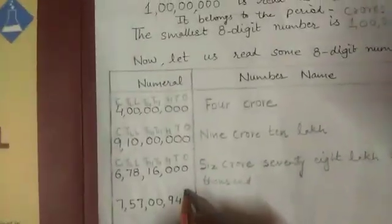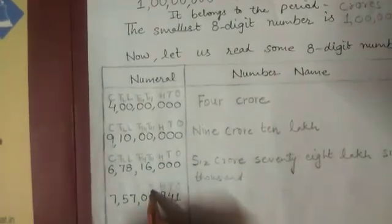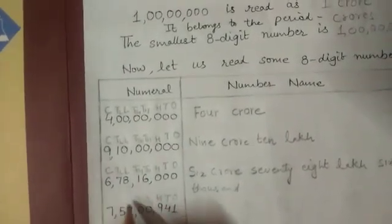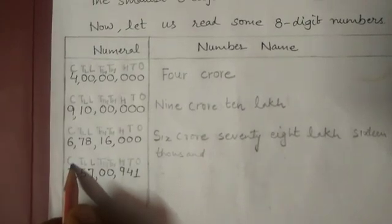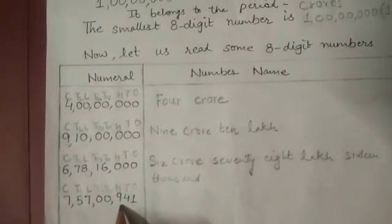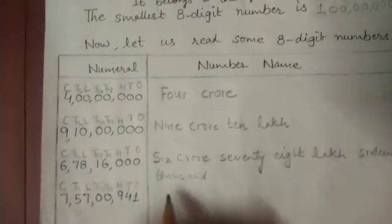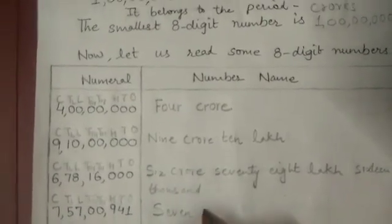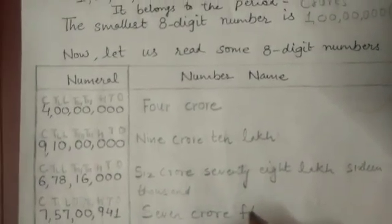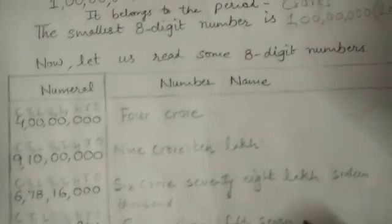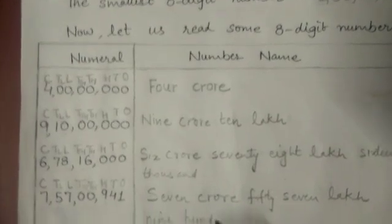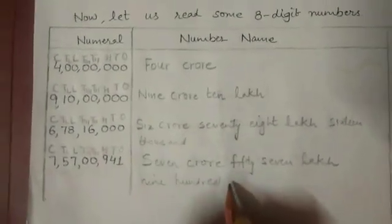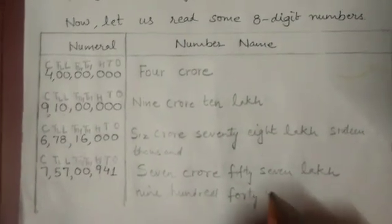Last number. Mark the places: ones, tens, hundreds, thousands, ten thousands, lakhs, ten lakhs, crores. Now seven crore, fifty-seven lakh, nine hundred forty-one. So what we will write here: seven crore, fifty-seven lakh, nine hundred forty-one.